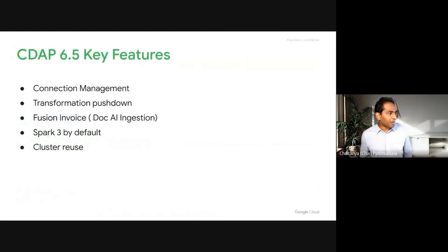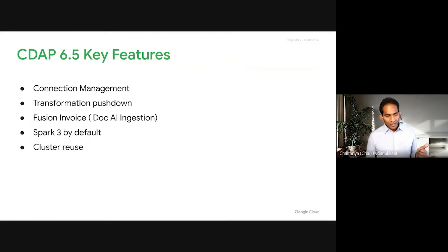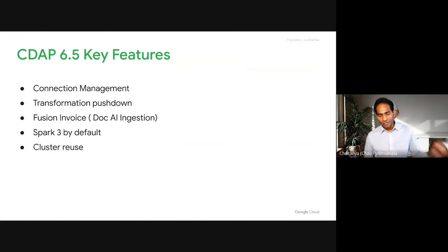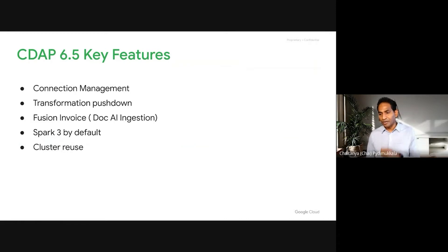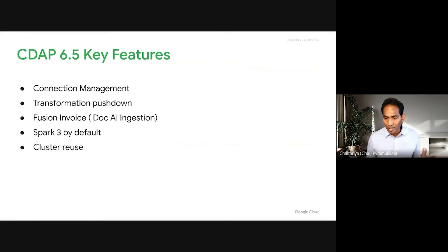With 6.5, there are five key things we have done. First is connection management. Today, when you use pipelines within CDAP, you have to create connections for every single pipeline and you cannot reuse them — you can parameterize them but not reuse connections. We now have a central repository where you can create and store connections and use them in Wrangler and in pipelines.